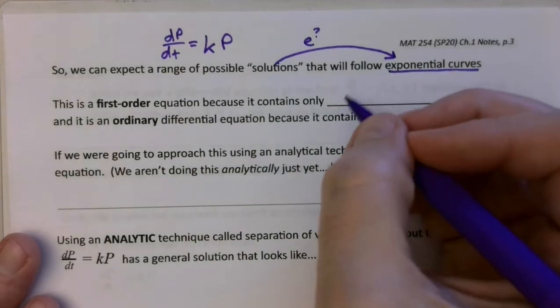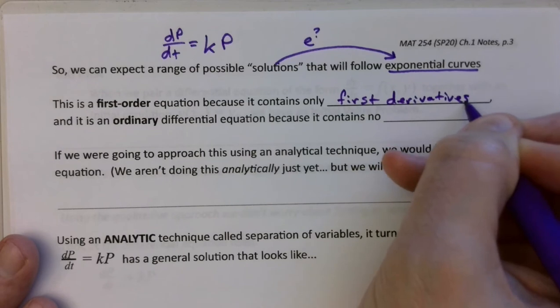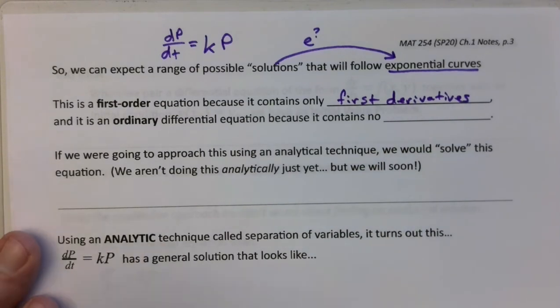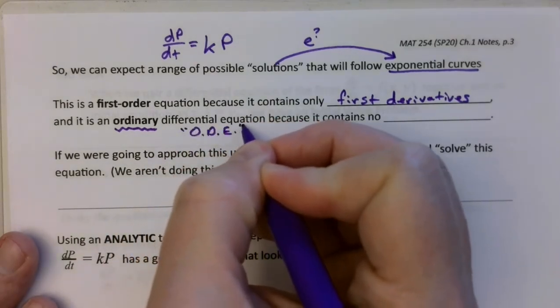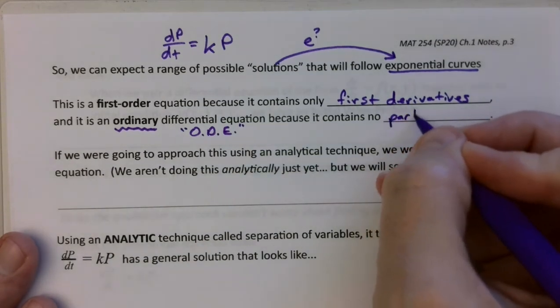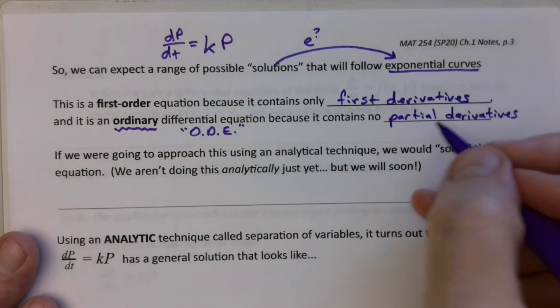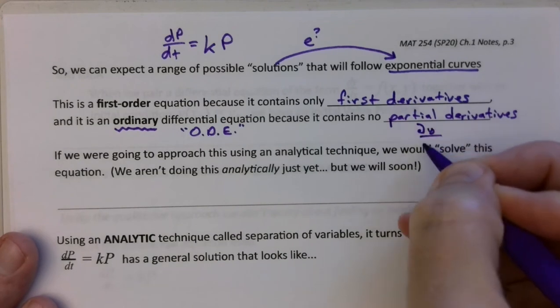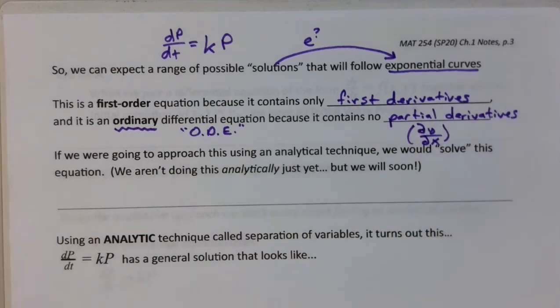So this is a first order equation because it only contains first derivatives. We already talked about first order, second order, stuff like that. But it's also referred to as an ordinary differential equation. And sometimes it's abbreviated ODE, an ordinary differential equation, because it contains no partial derivatives. And those of you who've had Calc 3 recognize partial derivatives, the partial derivative of y with respect to x, these little curly d's get used for the partial derivative. So that's what we mean when we say partial derivative. And if you haven't seen those before, if you haven't taken Calc 3, that's okay. We're only going to run into them a couple of times in this class and they'll be in context and they'll make sense. So don't worry about it.